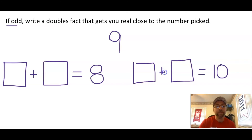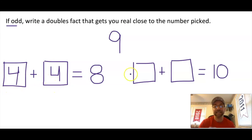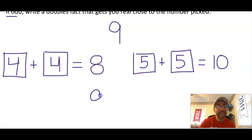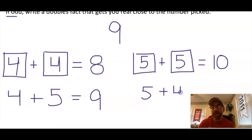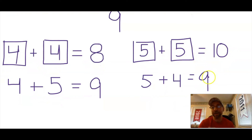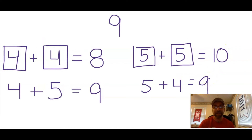Did you come up with 4 plus 4 equals 8? They have equal addends. Did you come up with 5 plus 5 for 10? Again, equal addends. To equal the number 9, I can't use equal addends — I would have to do 4 plus 5, which is doubles plus 1, because I had to add one more to get from 8 to 9. And 5 plus 4 equals 9 would be doubles minus 1, going from 10 down to 9. Awesome job!